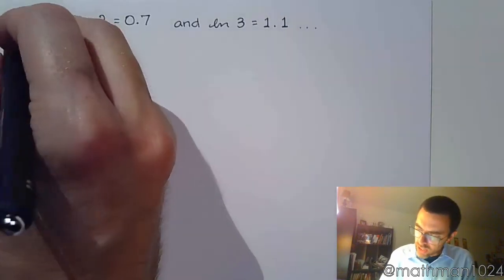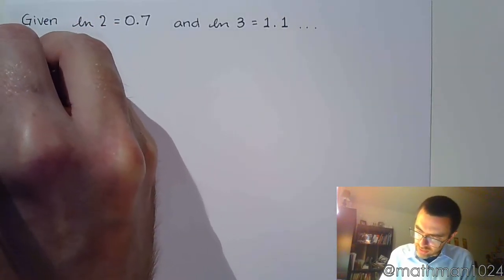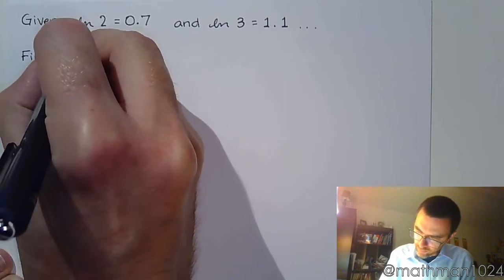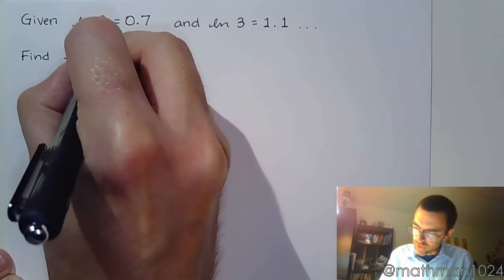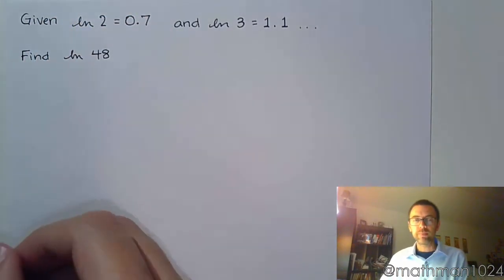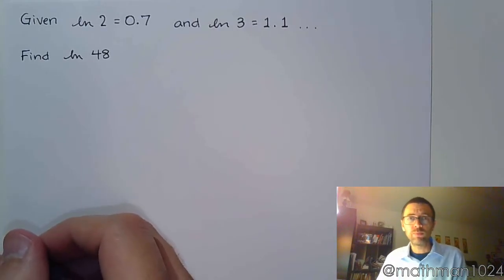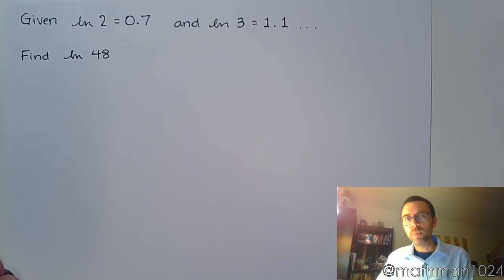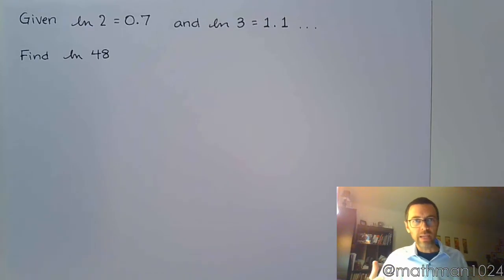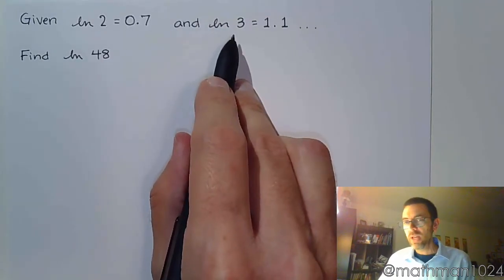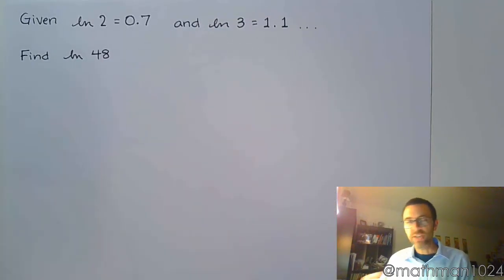So if you're given this, and you were told to find the natural log of 48, let's see what we can do. If you think back to those properties of logarithms, if you have a product or you have a quotient or you got powers, you can expand that, and that's what we want to do here. Because see, 48 is made up entirely of factors of 2 and factors of 3. I just have to rewrite it.